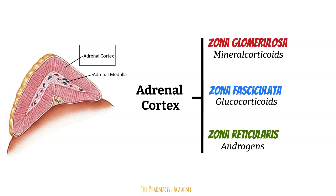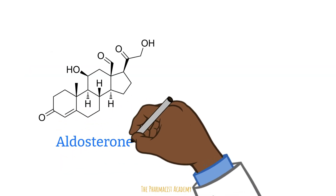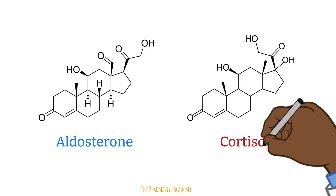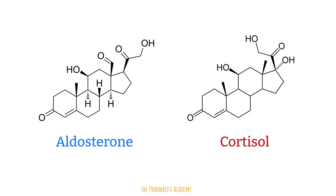Mineralocorticoids and glucocorticoids are both a type of corticosteroid. An example of a mineralocorticoid is aldosterone, and an example of a glucocorticoid is cortisol. Their chemical structures are included here so you can see how similar they look — they are like brothers, and we will see later on that they have some overlapping functions.